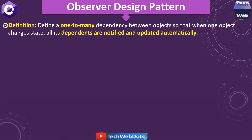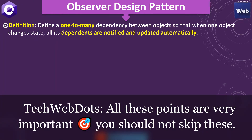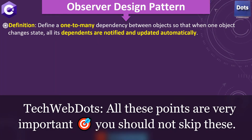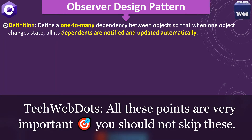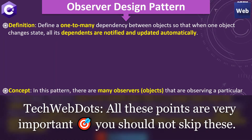Let's start with the definition: define a one-to-many dependency between objects so that when one object changes state, all of its dependents are notified and updated accordingly. The important points are the one-to-many dependency and that all dependents are notified and updated automatically.